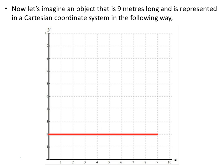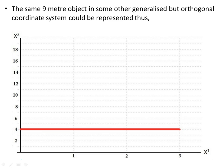Let's imagine an object that is nine meters long in the real world. Its physical length is nine meters, and in the Cartesian coordinate system it goes from x equals zero to x equals nine. So its coordinate component value is nine, and its physical component value is also nine. In the generalized coordinate system, however, the same nine-meter object has endpoint coordinate values of x1 equals zero and x1 equals three.